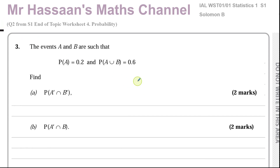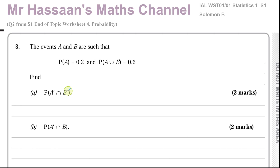This is question two from my end-of-topic worksheet on probability. A student has asked me to answer this question. It says: the events A and B are such that the probability of A is equal to 0.2, and the probability of A union B equals 0.6. Find the probability of A complement intersection B complement.